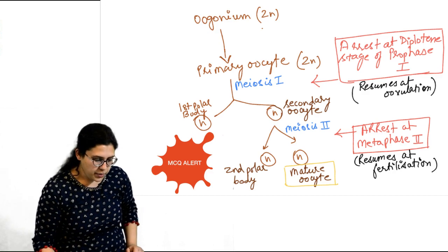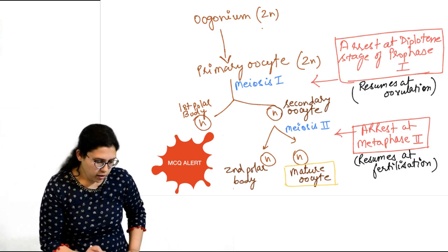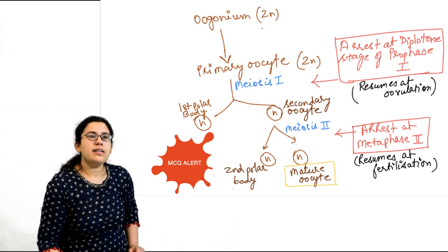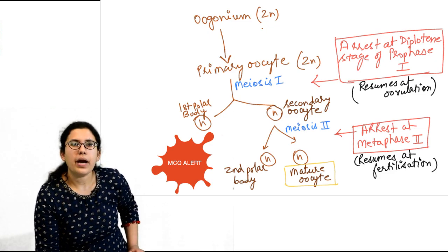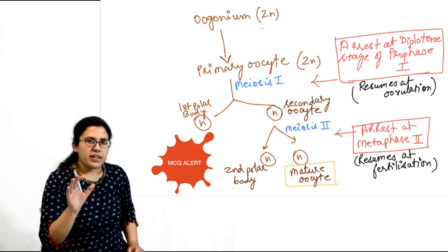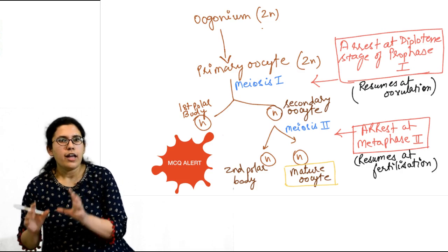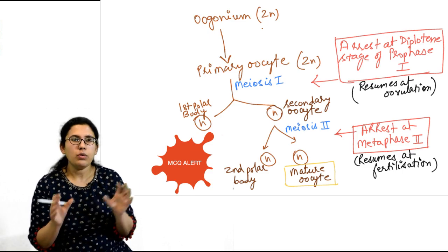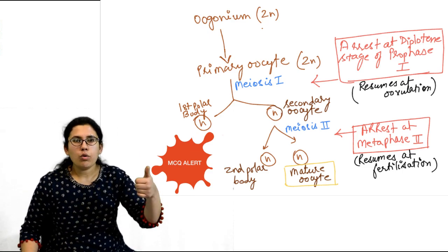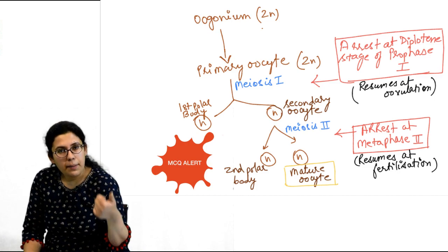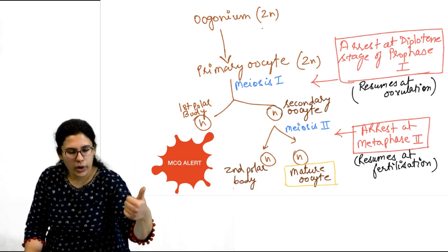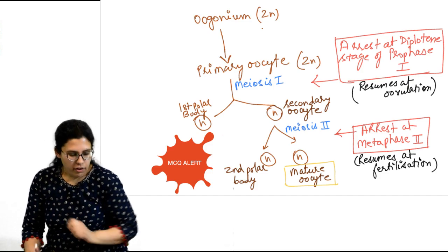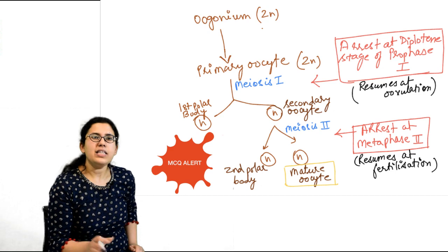Similar but special changes happen with oogonia. The oogonium, which is a diploid cell, undergoes meiosis 1 — and at this point its name changes to primary oocyte. If the primary oocyte is able to complete meiosis 1, it ejects the first polar body and forms a secondary oocyte. This secondary oocyte is now haploid, while the primary oocyte was diploid.